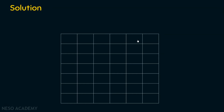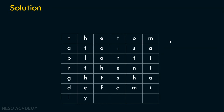Now we will start filling the plaintext: 'the tomato is a plant in the nightshade family.' If you observe, there are some empty spaces. We fill every blank space with X. After filling all blank spaces with X, we have populated the table.